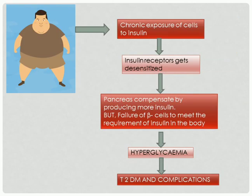If we are obese, there is a chronic exposure of our body cells to insulin, so the insulin receptors will not respond or they will get desensitized — they won't be sensitive anymore towards insulin. So glucose will not enter inside the cell. This is compensated by the pancreas by producing more and more insulin. If the cells do not respond to insulin, the pancreas compensates by producing more insulin, but that actually fails. The failure of the beta cells to meet the insulin requirement results in hyperglycemia and type 2 diabetes mellitus and its complications.